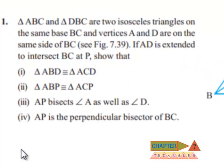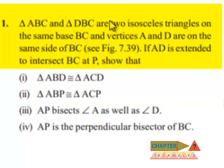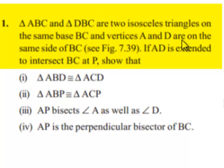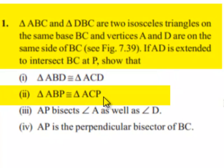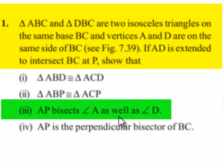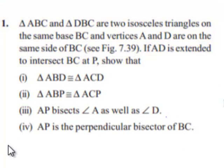Moving on to the first question. Triangle ABC and triangle DBC are two isosceles triangles on the same base BC, and vertices A and D are on the same side of BC. If AD is extended to intersect BC at P, show that: (1) triangle ABD is congruent to triangle ACD, (2) triangle ABP is congruent to triangle ACP, (3) AP bisects angle A as well as angle D, and (4) AP is the perpendicular bisector of BC.